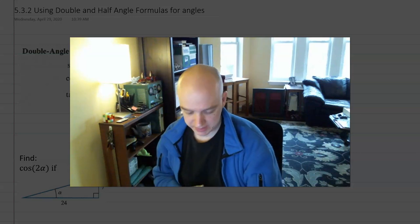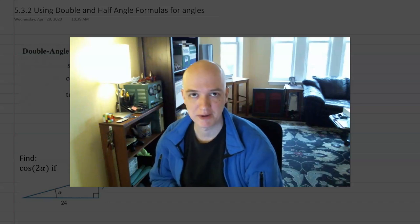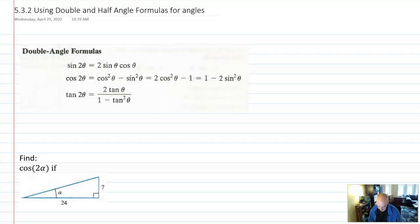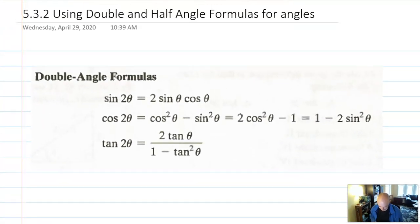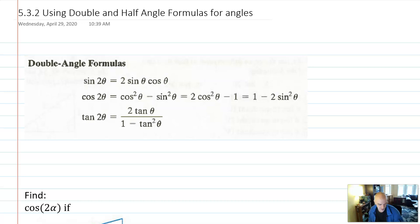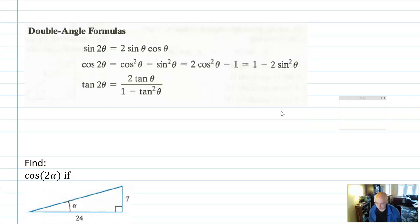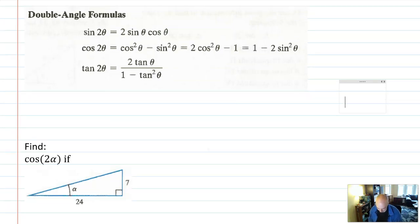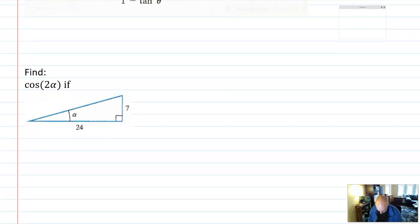Hello folks, welcome back. Today we're going to talk about using the double and half angle formulas to find the measures of angles. I'm expecting that you watched the previous video 5.3.1 where we derived the double angle formulas and did some work with identities. But now we're going to use those formulas in a more precise way to actually compute the measures of some different angles.